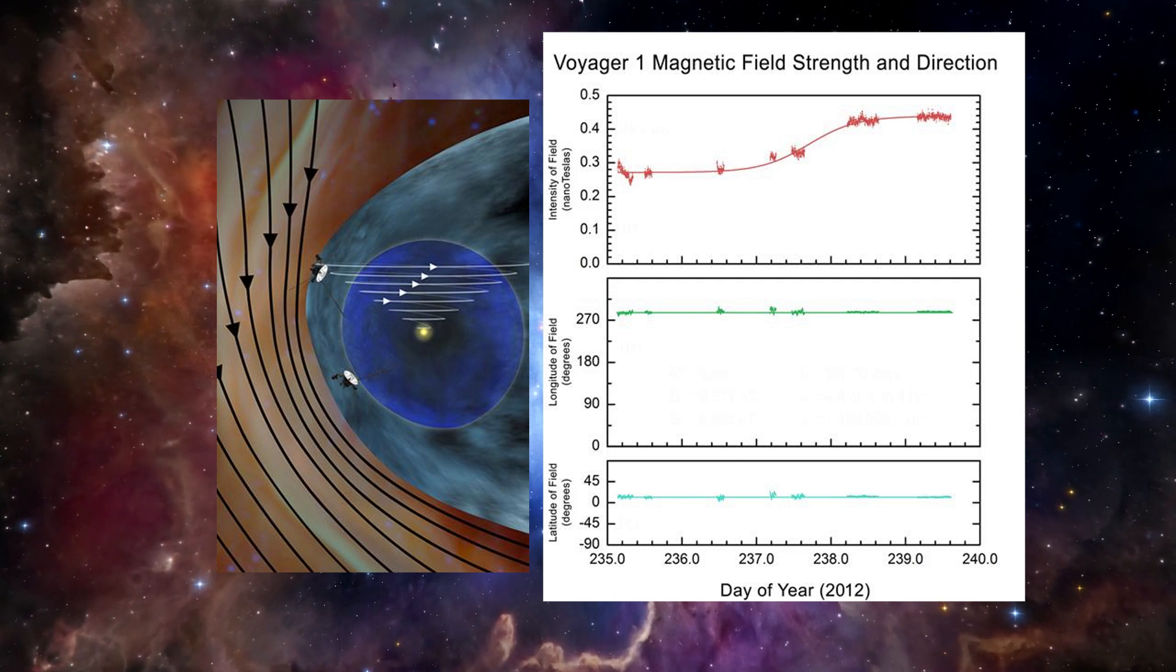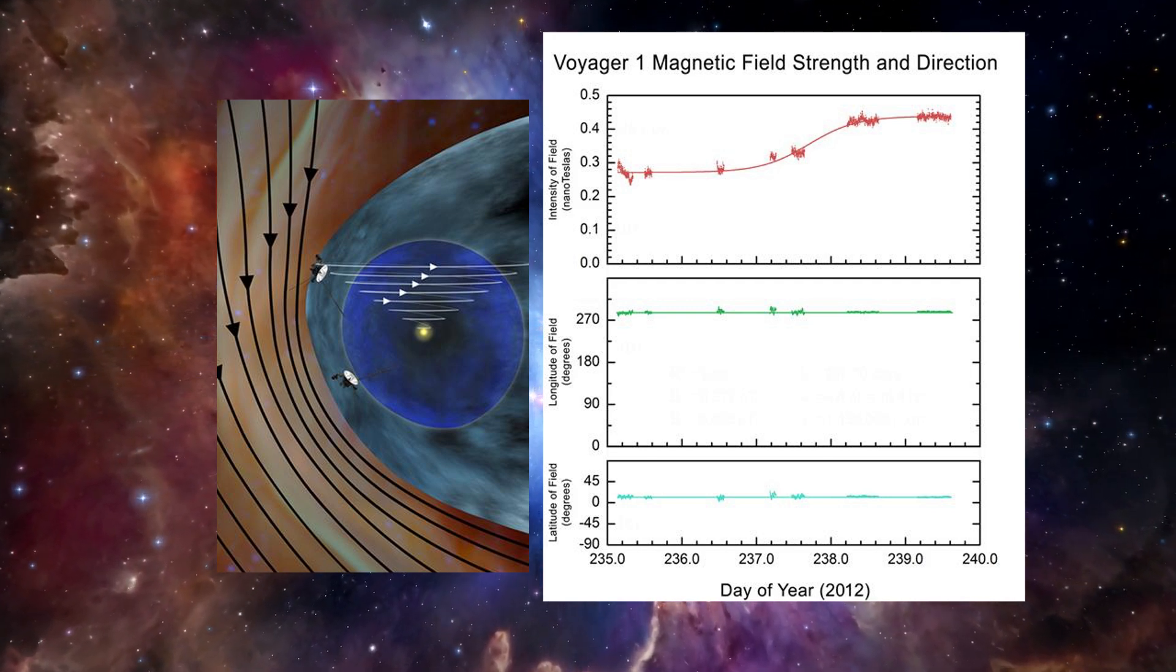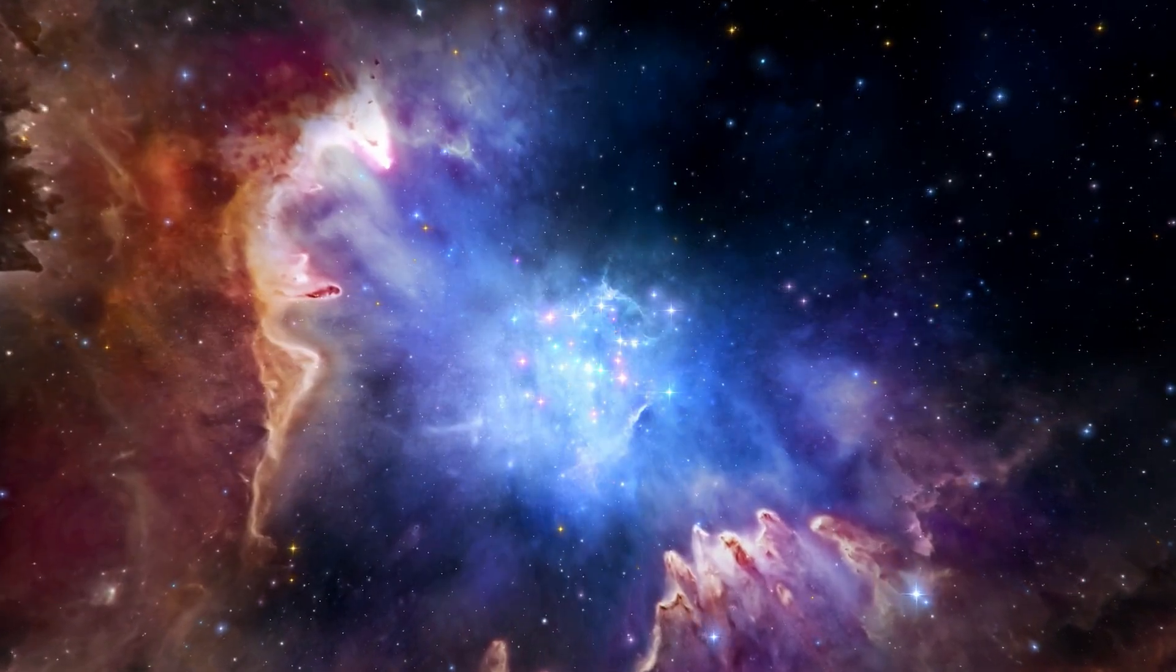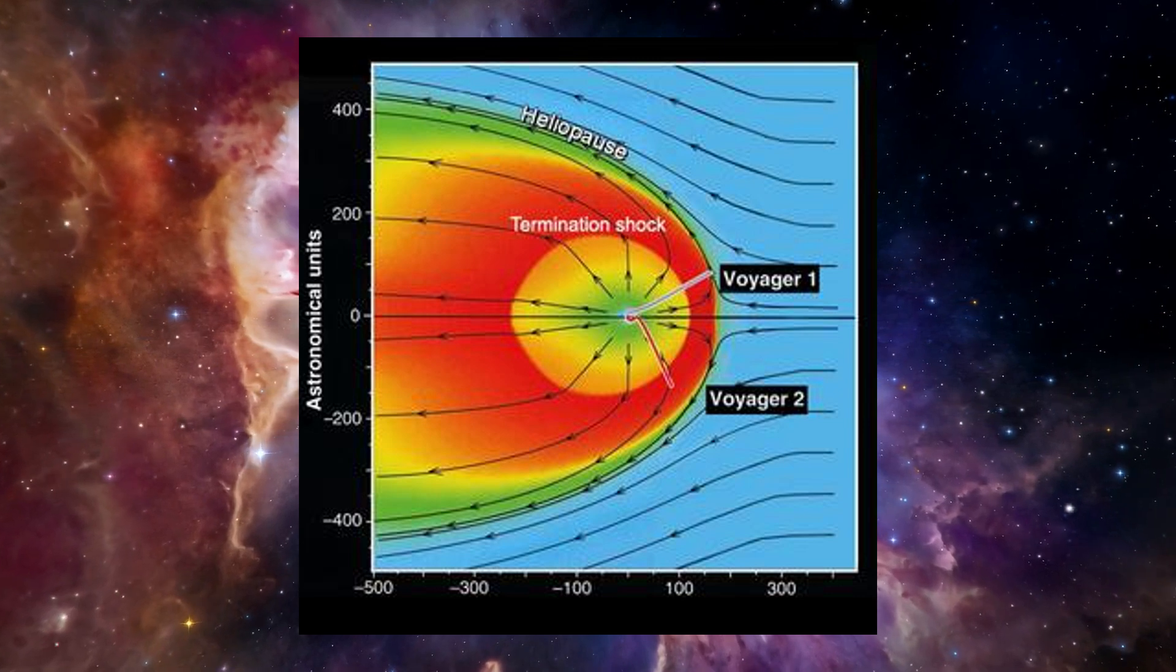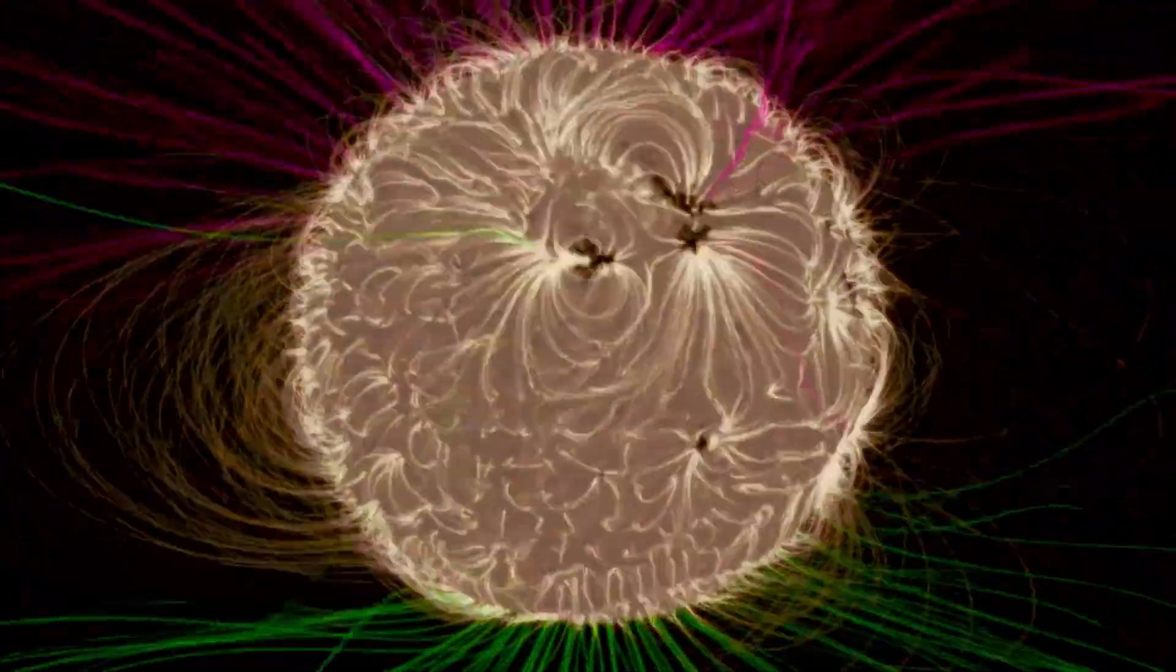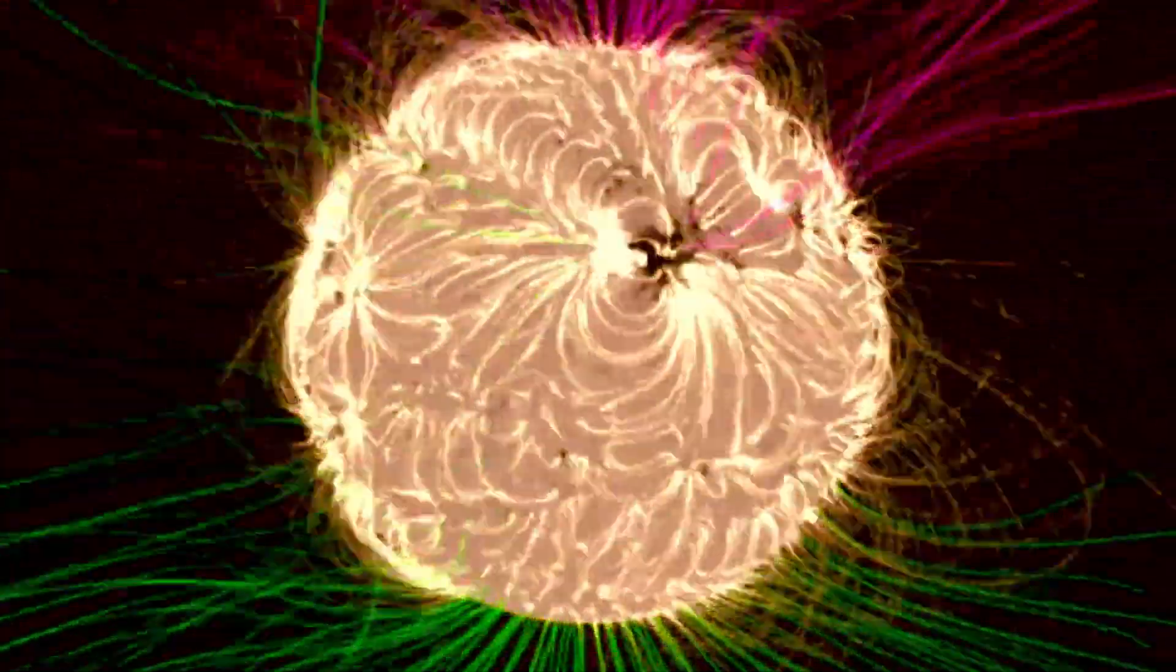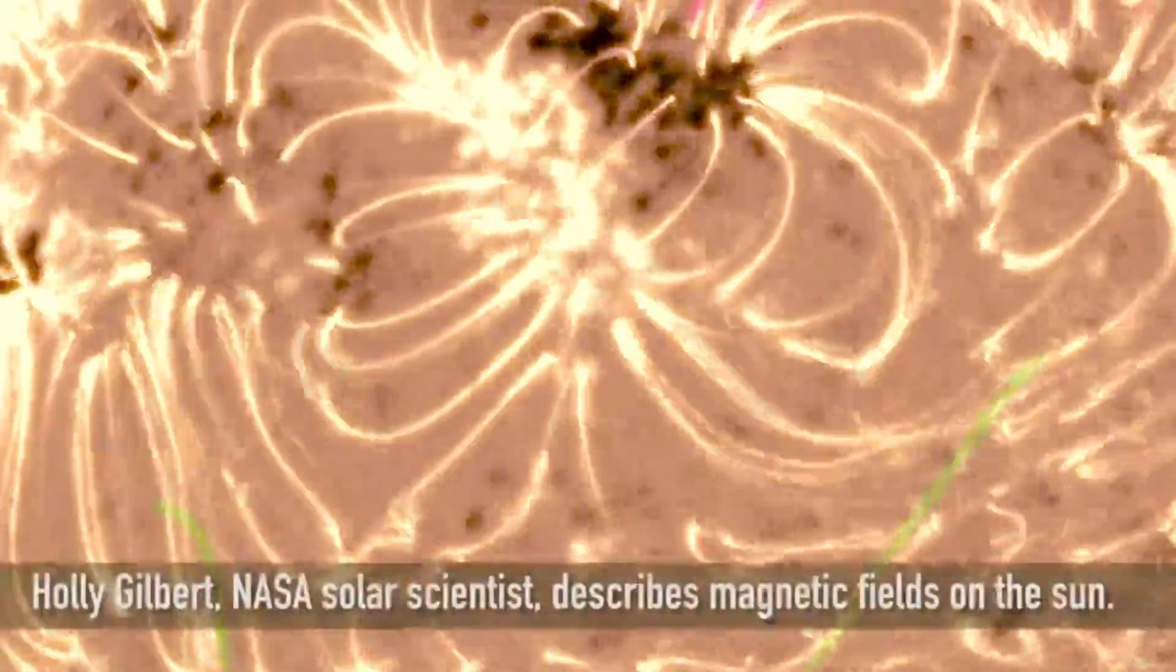One of the most surprising discoveries was the nature of the magnetic environment. Scientists had long theorized about the boundary between our Sun's magnetic influence and the broader galactic magnetic field. Voyager 1 revealed that this boundary was far more turbulent and dynamic than imagined. The spacecraft's magnetometer detected a magnetic field that was surprisingly uniform and aligned differently from the Sun's magnetic field, suggesting that interstellar space has its own distinct magnetic properties.